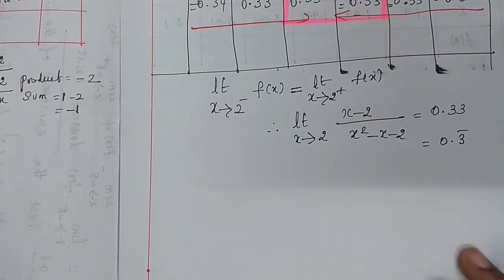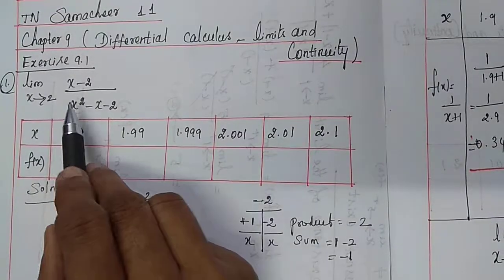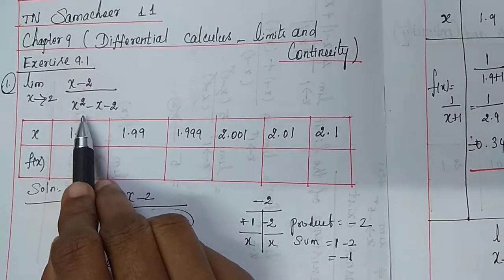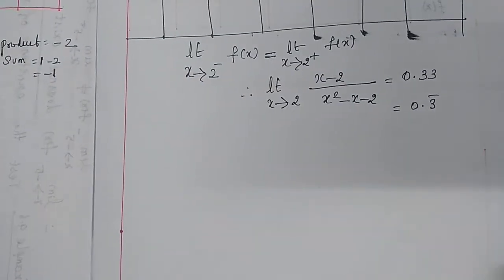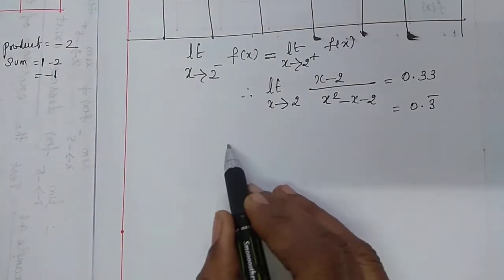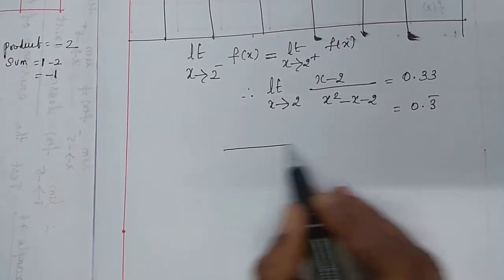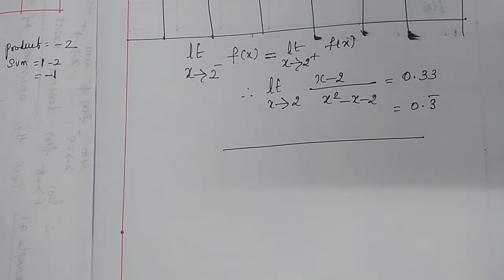Therefore, Question No. 1 is complete. The limit as x tends to 2 of (x − 2)/(x² − x − 2) is equal to 0.3̄. Thank you very much.